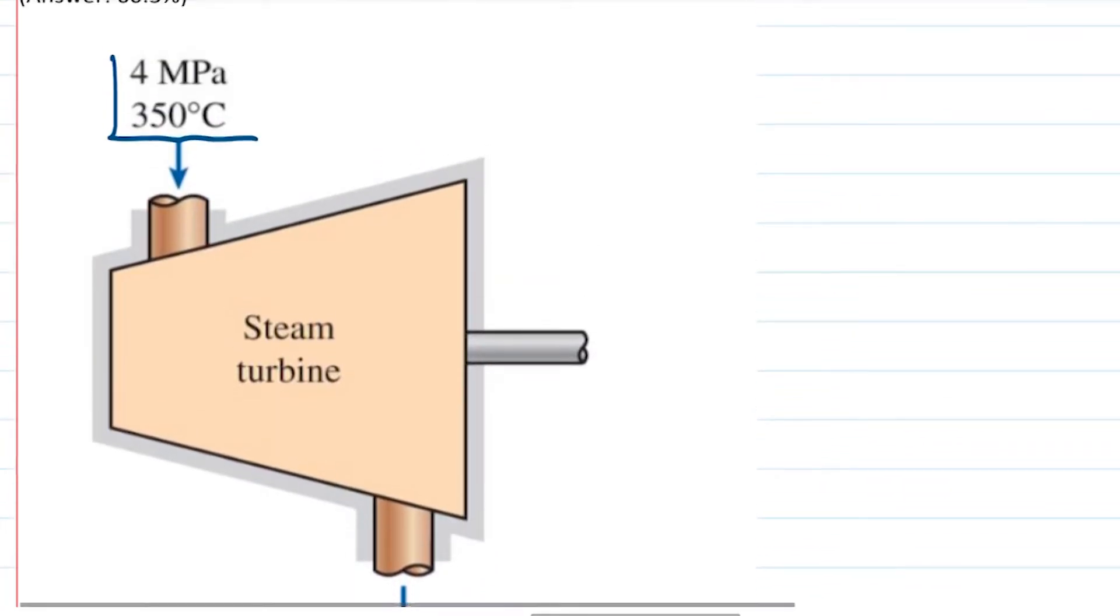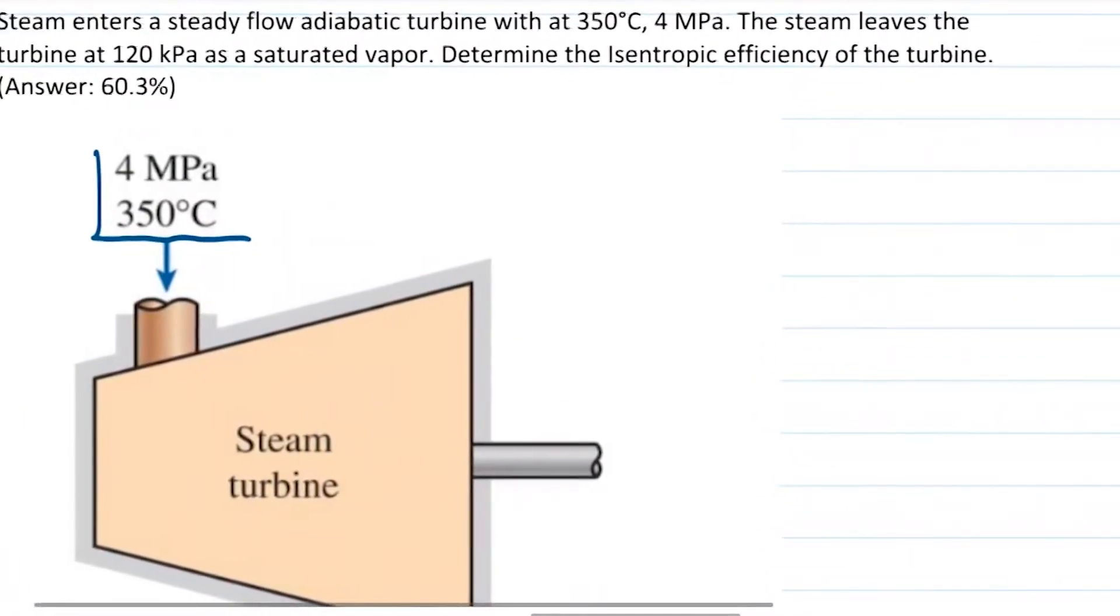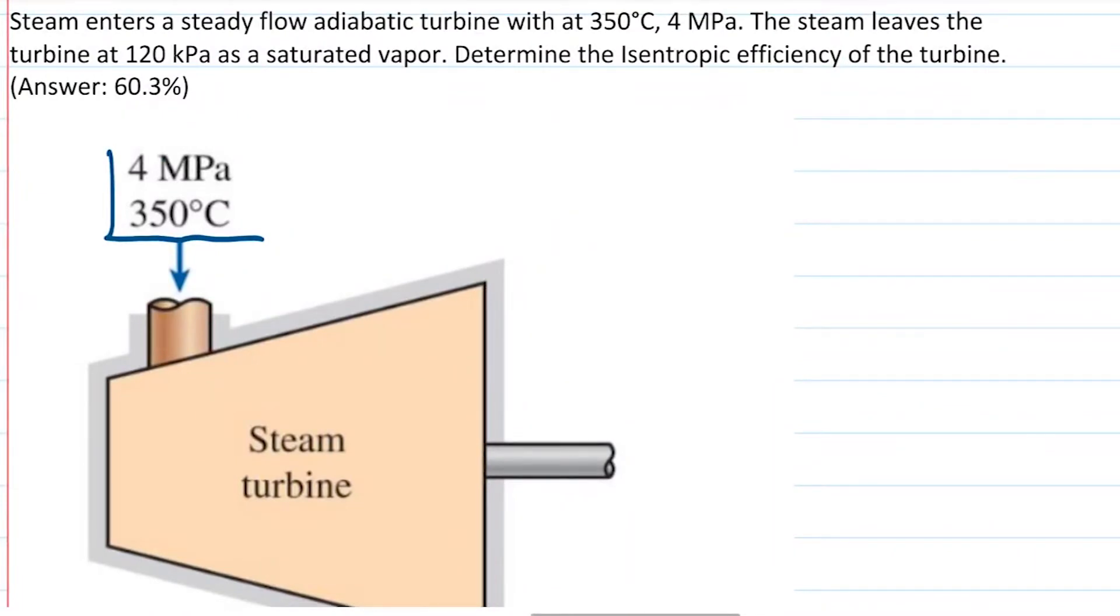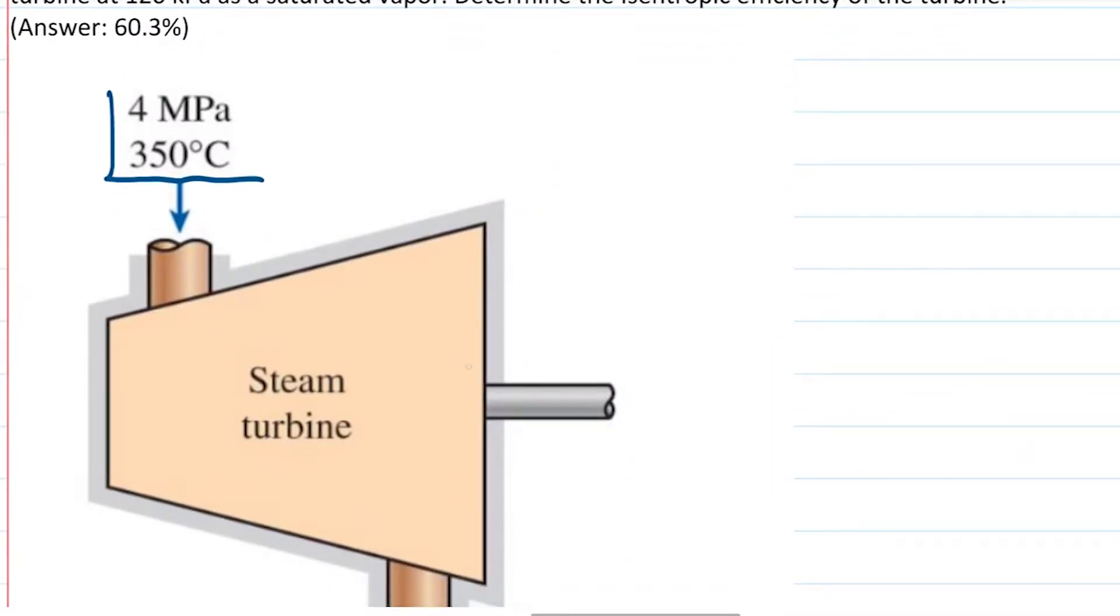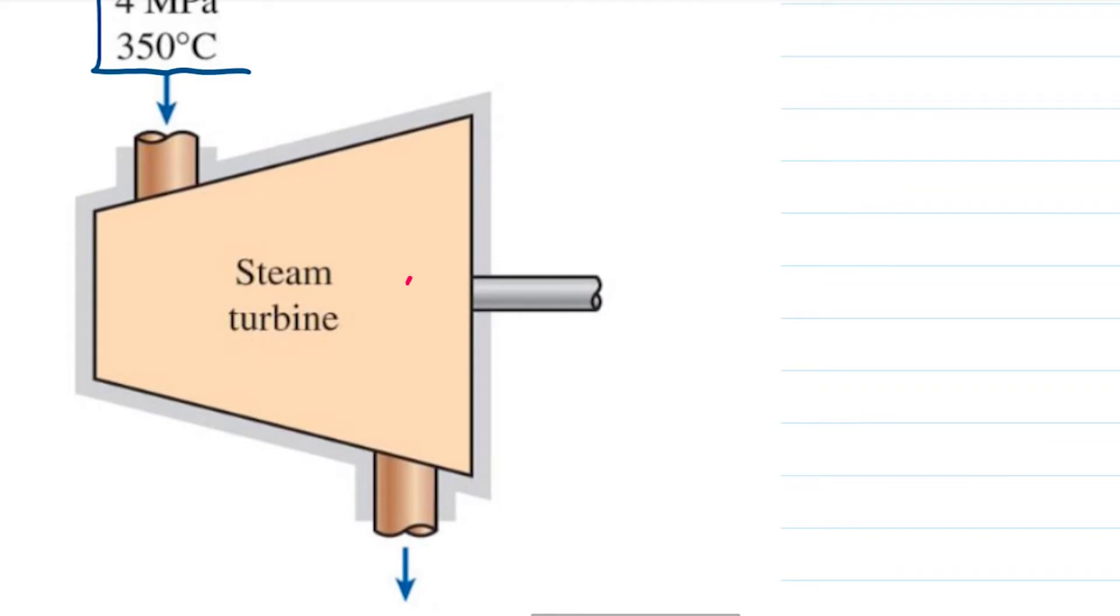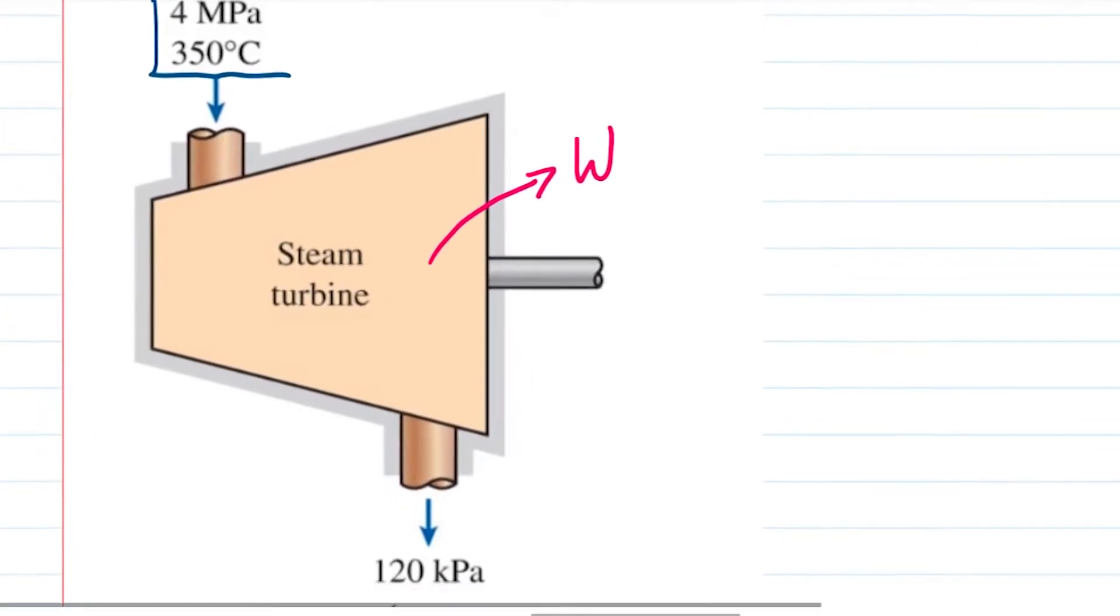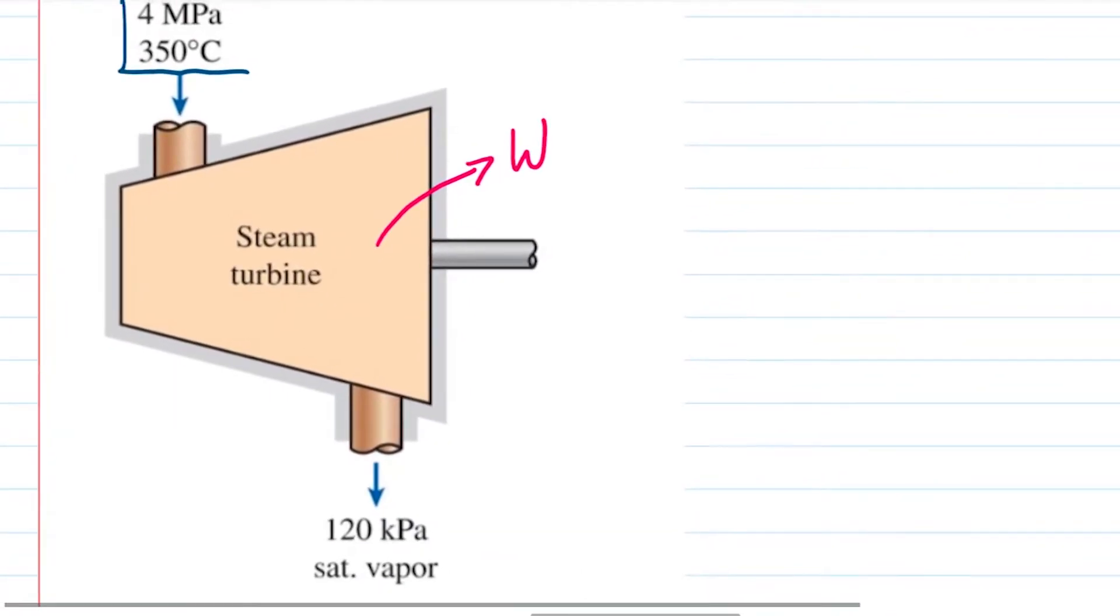So we have a little turbine here, we are entering with a set of properties that scream superheated state, that we can check, and then we're leaving at a saturated vapor. They're already kind enough to give us that the output is a saturated vapor. The steam is taking this energy and converting it into work, outputting some work for us.